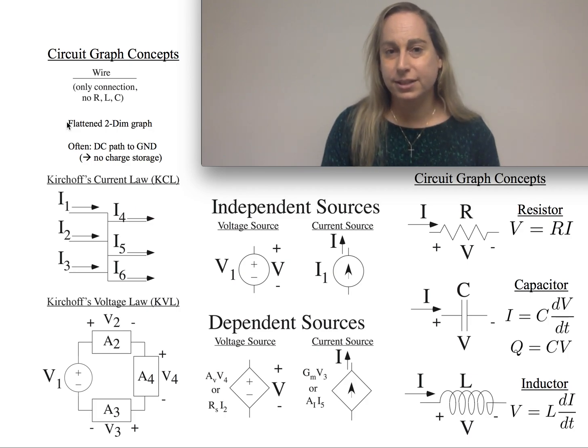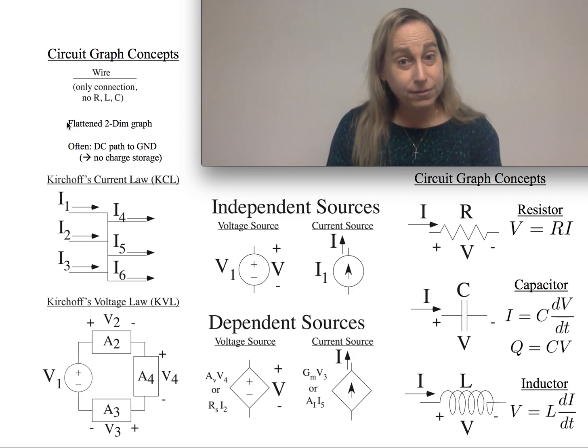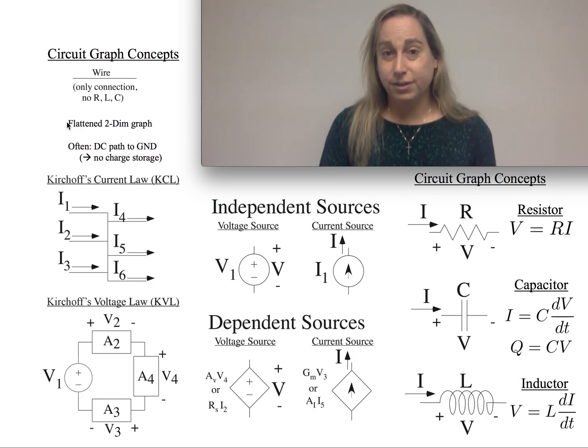Typically, as we'll see these graphs, often the ones we're going to build could eventually flatten to a two-dimensional graph. It's a useful little point, not always essential. You'll also see sometimes people say we need to have a DC path to ground, and this is often true, but not always true.